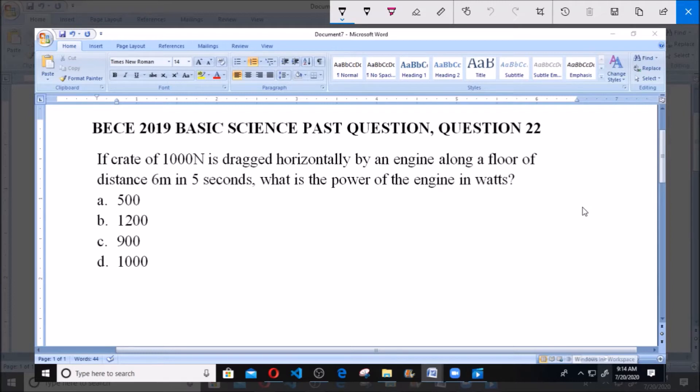If a crate of 1000 Newton is dragged horizontally by an engine along a floor, a distance of 6 meters in 5 seconds, what is the power of the engine in watts? The options are: a) 500 watts, b) 1200 watts, c) 900, and d) 1000.